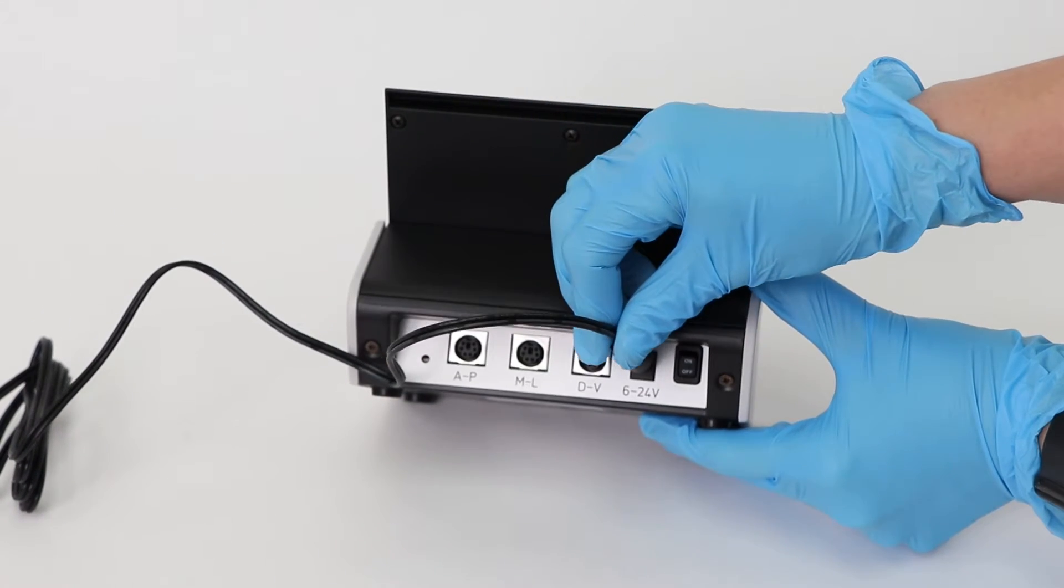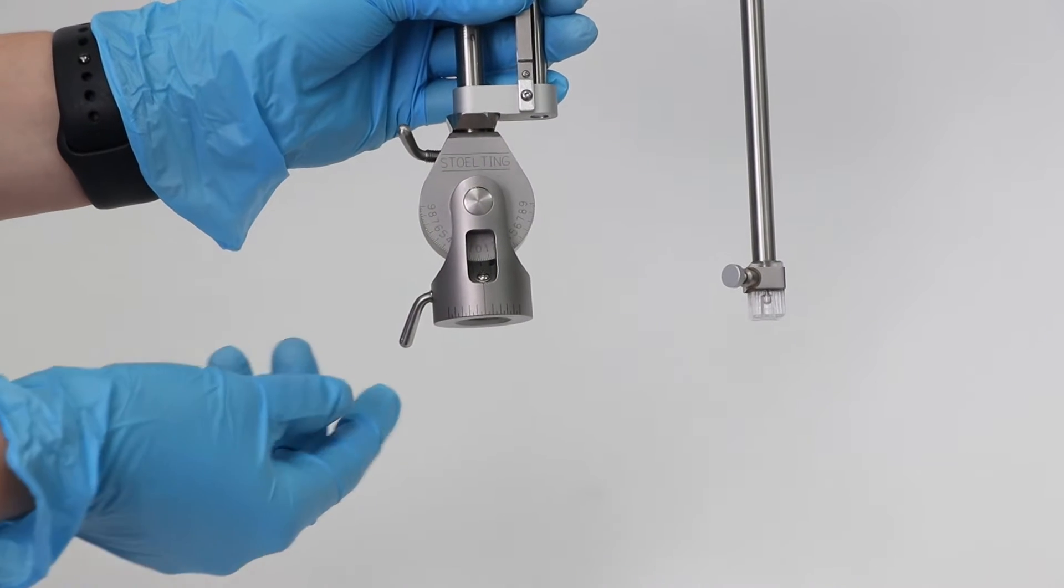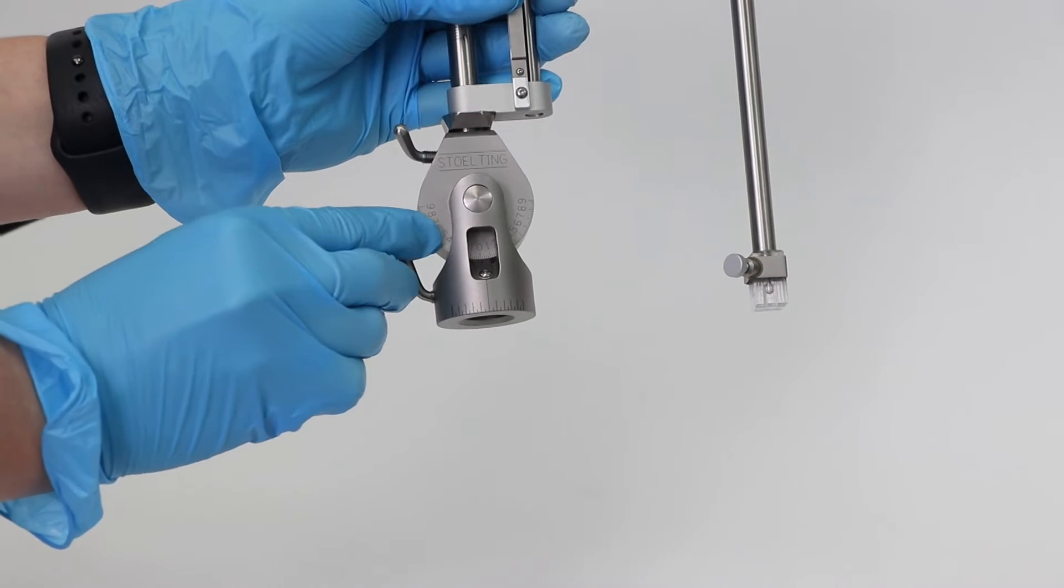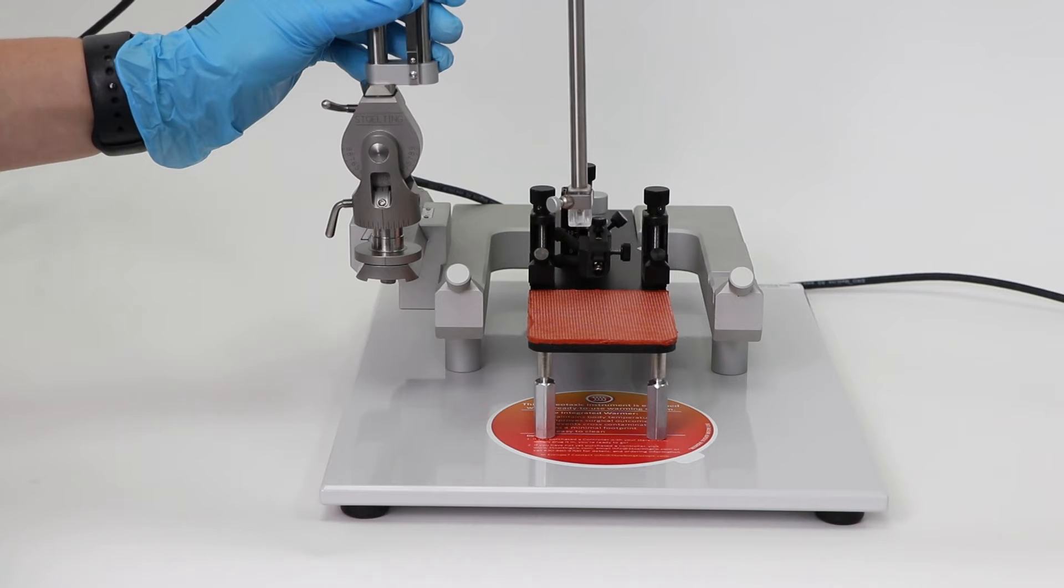First, plug in the power cable to the digital display. Next, take your manipulator and make sure the fastening screw closest to the base is loose. Place it on the anterior posterior knob fitting.